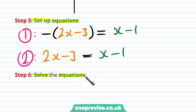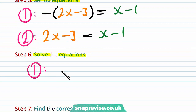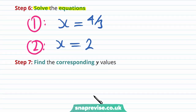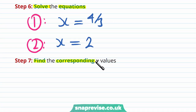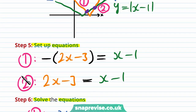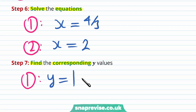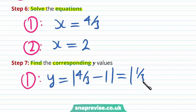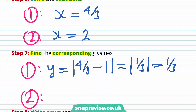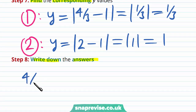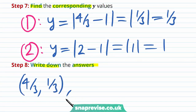Step 6 is to solve the equations. Solving the first equation, we get x equals 4 over 3. Solving the second equation, we get x equals 2. The seventh step is to find the corresponding y values by substituting into y equals the modulus of x minus 1. For the first one, the y value is the modulus of 4 thirds minus 1, which is the modulus of 1 third, giving y equals 1 third. For the second one, the y value is the modulus of 2 minus 1, which is the modulus of 1, giving y equals 1. The first intersection point is (4/3, 1/3) and the second intersection point is (2, 1).